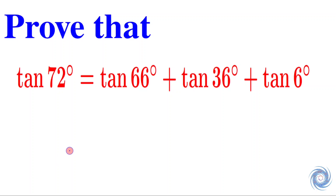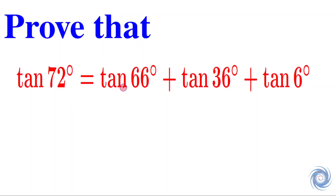Hello everyone! Welcome to the family of atomic mathematics. In this video we are going to solve a problem from trigonometry. The question is: prove that tan 72 degrees is equal to tan 66 degrees plus tan 36 degrees plus tan 6 degrees.